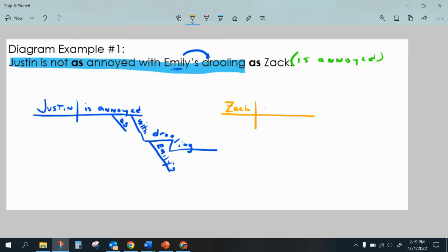And then I'm really saying 'Zack is annoyed.' These words are actually elliptical, and so I'm going to put them in parentheses. They're not really there.